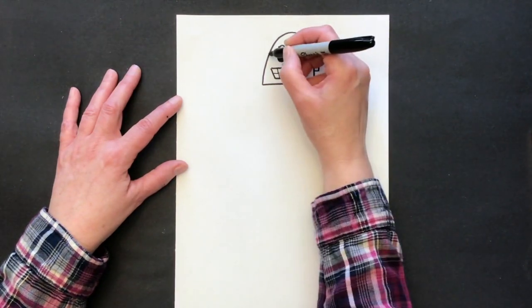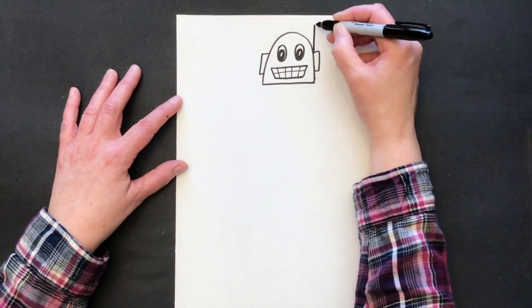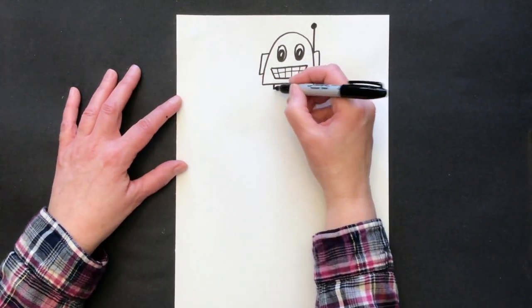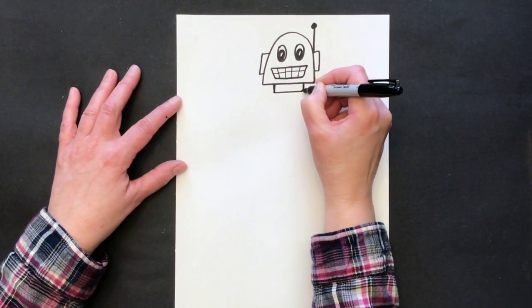And let's put some lines in there. And some rectangles on the sides. See, this robot has an antenna because it can be controlled by remote control. A small rectangle for a neck.